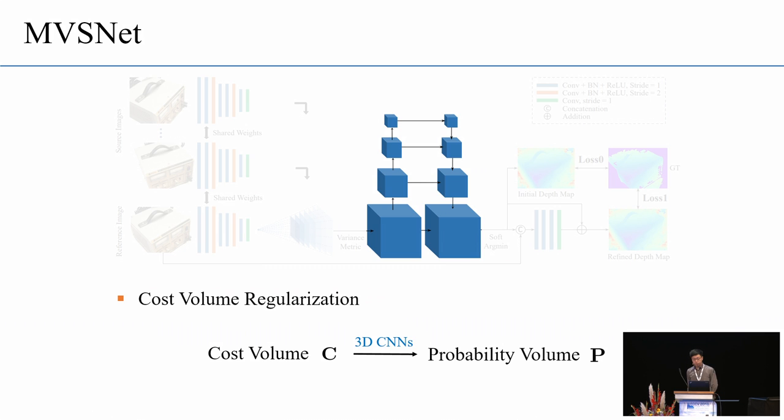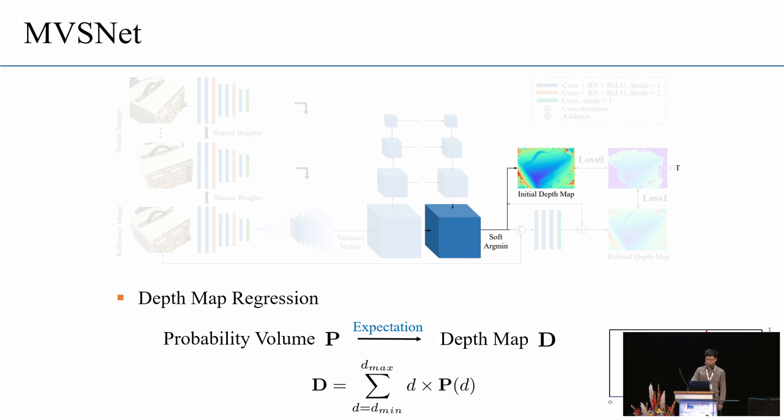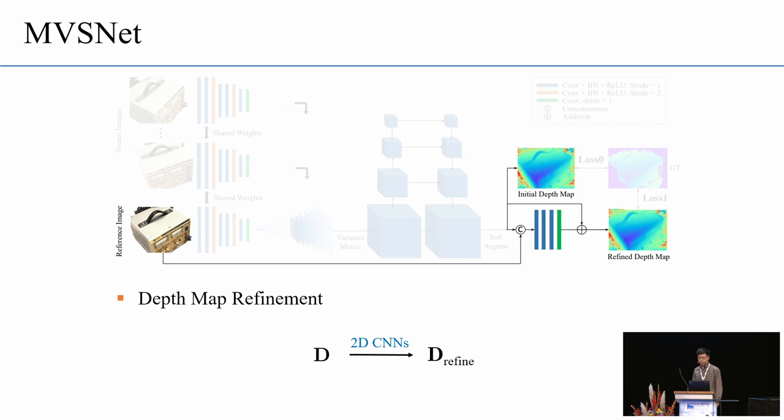Next, similar to other stereo and multi-view stereo algorithms, we apply a 3D unit to the network for the cost volume regularization. And the output of this step will go through a softmax layer to form a probability volume. With the probability distribution in the space, we then calculate the expectation of each pixel's depth as the initial depth map. And this step is also referred to soft argmax in other depth regression tasks. And to further refine the depth map, especially in the boundary areas, we concatenate the depth map and the reference image, and apply a refinement network to estimate the depth residual of the initial depth map. And the refined depth map is the MVSNet final output.